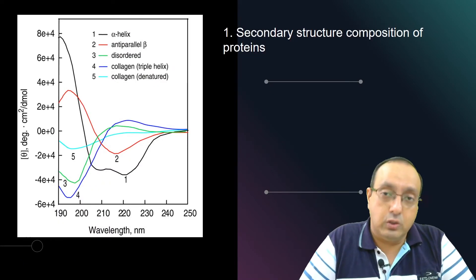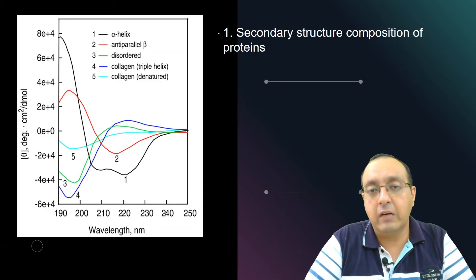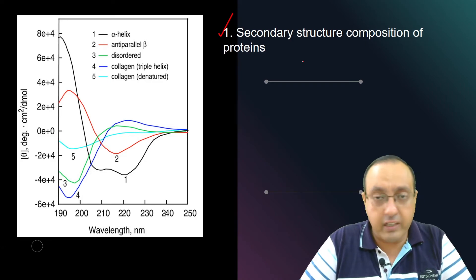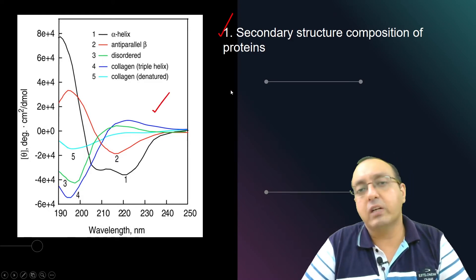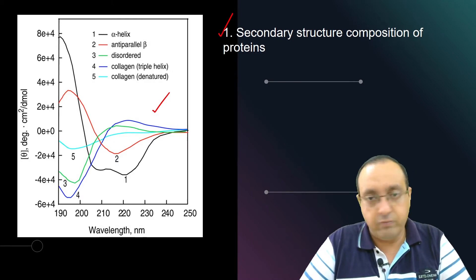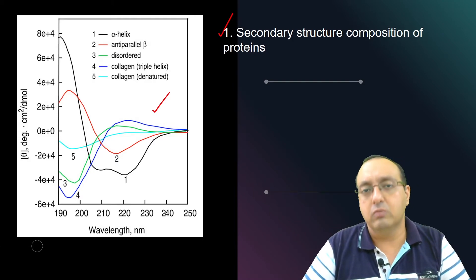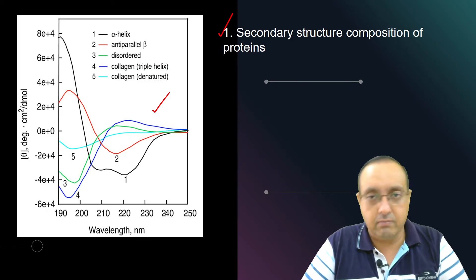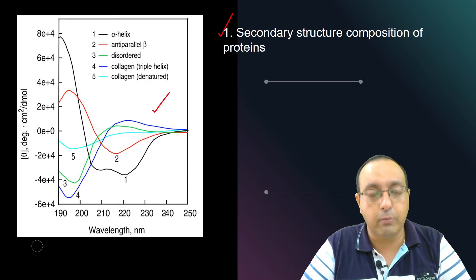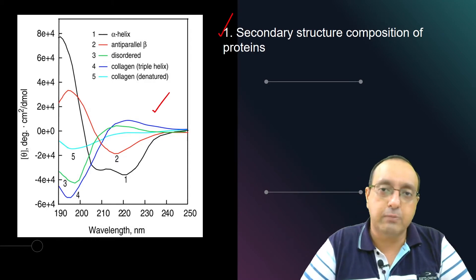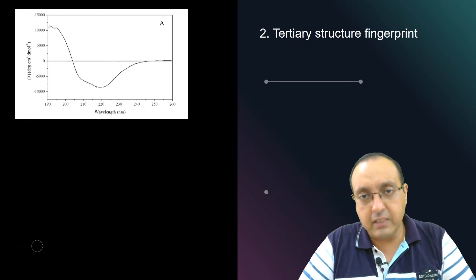The first and foremost application of circular dichroism is determining the secondary structure composition of proteins. We compare our protein of interest with the standard Phasmin spectra to see what kind of secondary structure composition is present. This is a very useful preliminary step before proceeding to X-ray diffraction or NMR analysis.